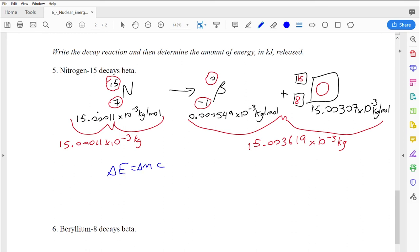Now I'm going to put these into the equation E equals mc squared. E equals delta mc squared. The change in mass is 15.003619 times 10 to negative 3 kilograms minus 15.0011 times 10 to negative 3 kilograms. And I'm going to multiply that all by the speed of light, which is 3 times 10 to the 8 meters per second squared. Let's see how much energy is released in this one.